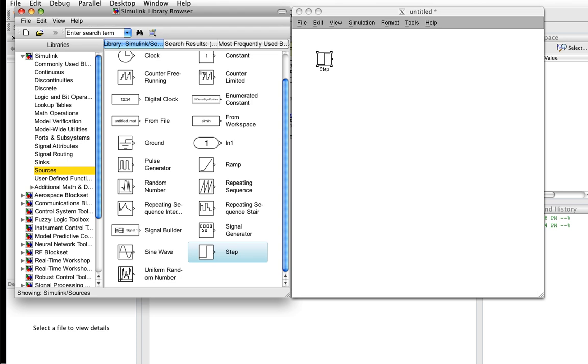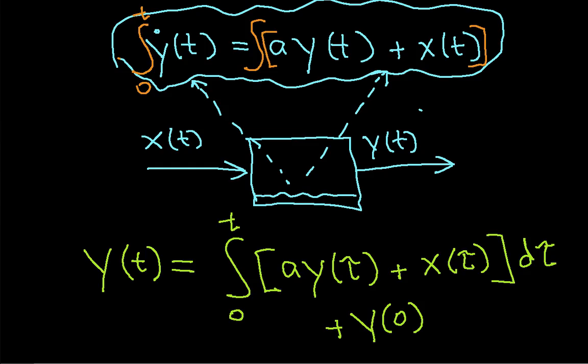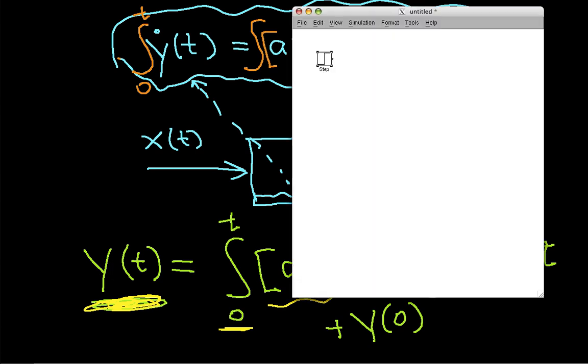Now for our output y, if we go back to our equation, we're going to have the output y. The output y is going to be the result of an integral of all of this stuff. So we need to get an integrator block and we'll connect that to, or we'll label its output as y.